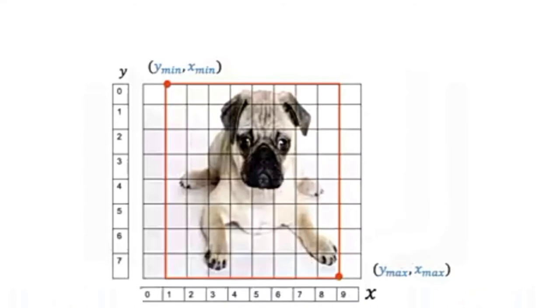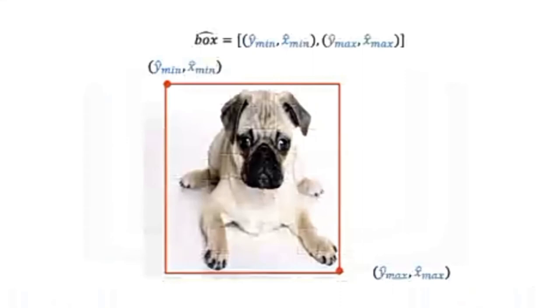Let's do an example. The coordinates in the upper left corner is given by 0, 1, and the lower right corner is 7, 8. The goal of object detection is to predict these points, so we add a hat to indicate its prediction.